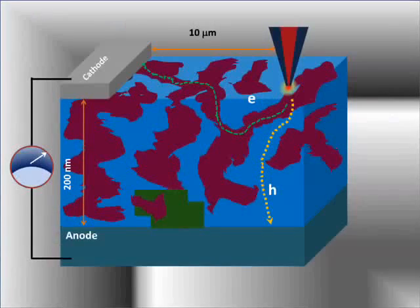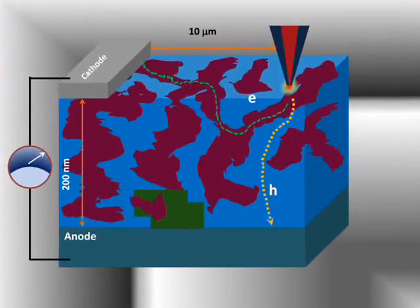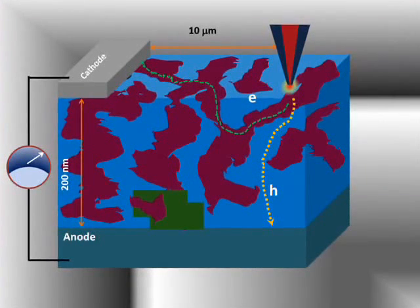The source of the photo-generated carriers stems from exciton generation under the excitation volume and their dissociation at the donor-acceptor interface. This is followed by charge transport to the corresponding electrodes. Non-illuminated regions or the acceptor networks in the bulk heterojunction film participate during electron transport from the point of generation to the cathode. Hence, the near-field photocurrent contrast method represents not only the active photocurrent generation region but also provides information on the acceptor network which constitutes the current pathways.